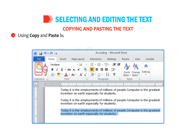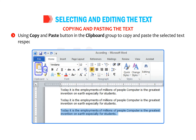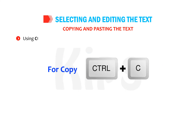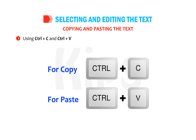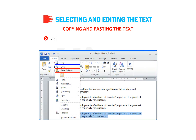The three ways to copy and paste are: first, using the Copy and Paste buttons in the Clipboard group on the Home tab; second, using the Ctrl+C and Ctrl+V key combinations to copy and paste the text respectively; and third, using the Copy and Paste options from the context menu.